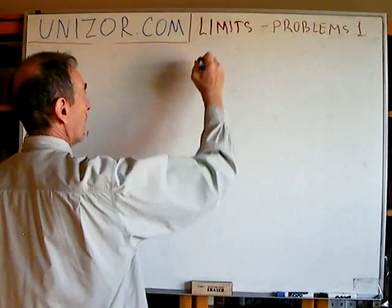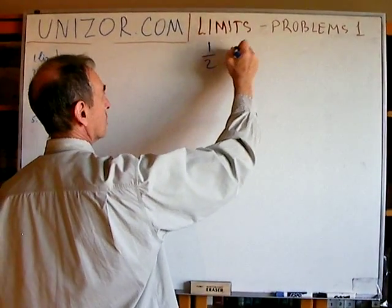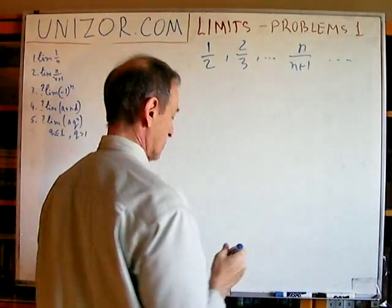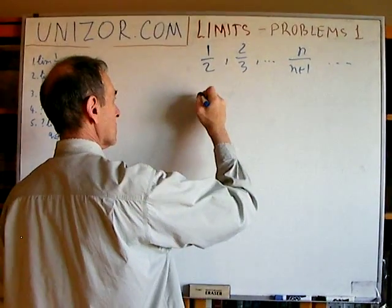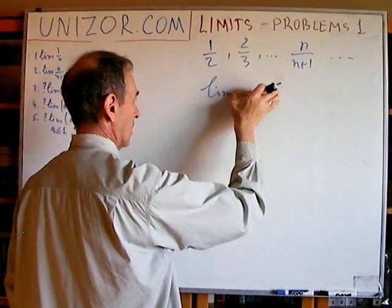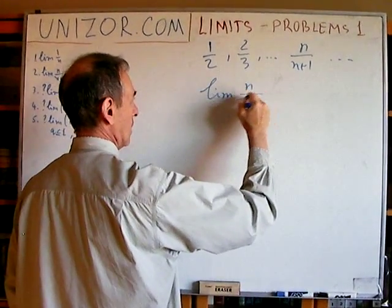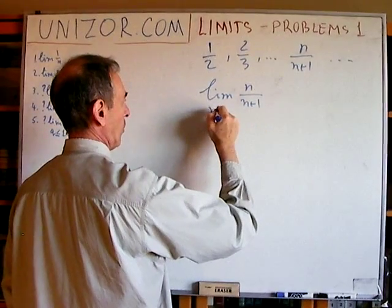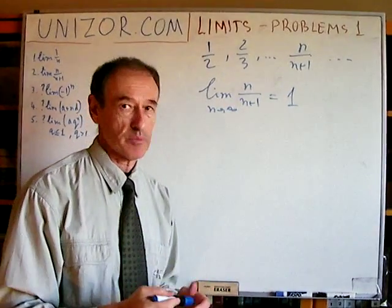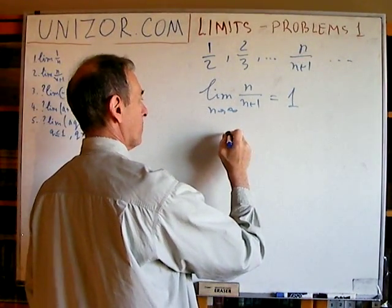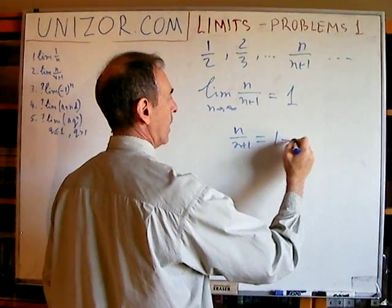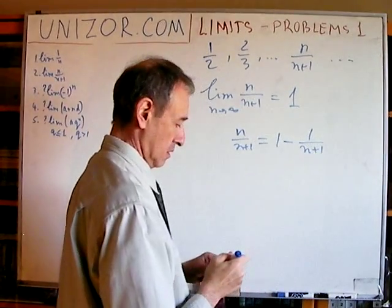Now, a similar problem: the sequence 1/2, 2/3, ..., n/(n+1), and so on. I state that the limit of this sequence as n goes to infinity is equal to 1. Intuitively it's obvious. Why? Because n/(n+1) is equal to 1 - 1/(n+1). That's obvious: (n+1)·1 gives n+1 minus 1 over n+1, which is n/(n+1).